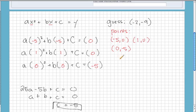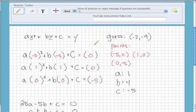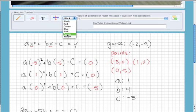Okay, so here we have that a was equal to 1, b was equal to 4, and c was equal to negative 5. So that's important, because now we can write the equation of our parabola.